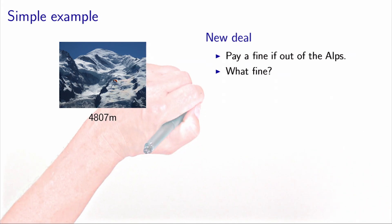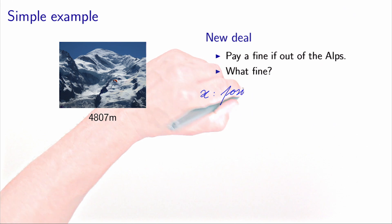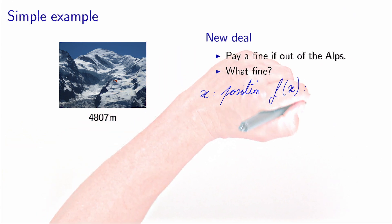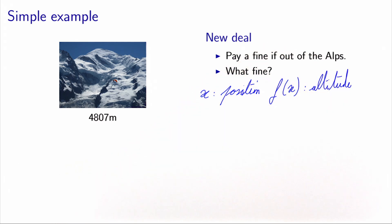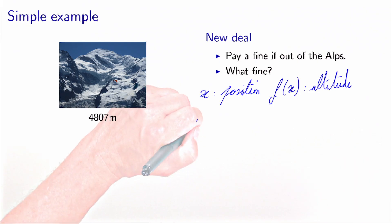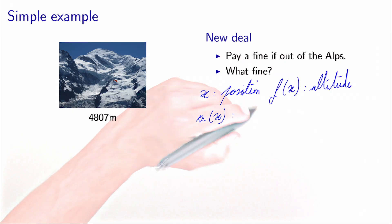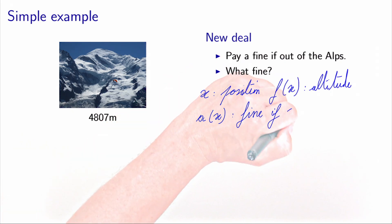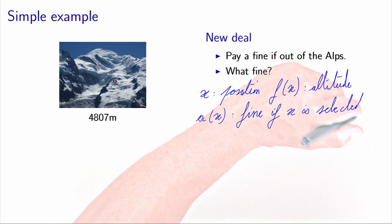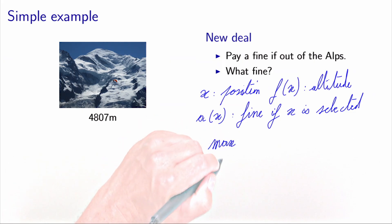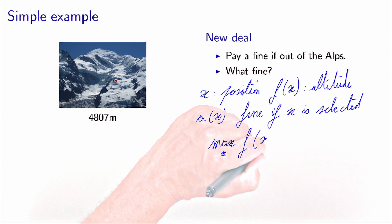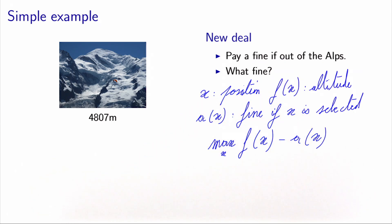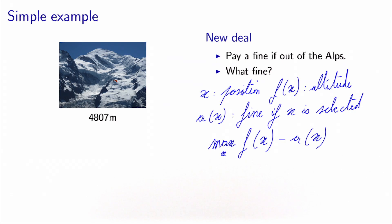Let's model this new deal. Again, x is the position and f(x) is the altitude — no change there. But now we define a(x), which equals the fine if x is selected. The new optimization problem is the maximization of f(x) minus a(x), with no constraint — the alpinist can be wherever he wants. The question is: what should the fine be so that the solution is the same as before?